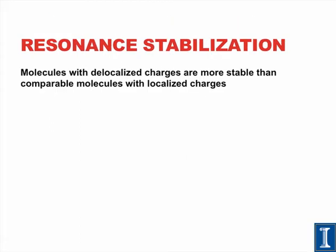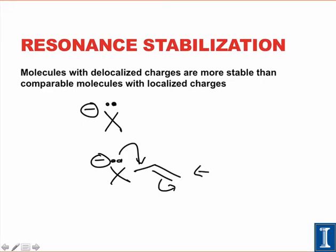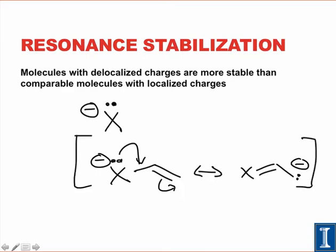Let's explore resonance stabilization in more detail. The core principle is that molecules with delocalized charges are more stable than comparable molecules with localized charges. A bare lone pair on an isolated atom is going to be less stable than a molecule whose negative charge is spread out over multiple atoms via resonance. Because of the delocalization of charge, the molecule with resonance is more stable than the one that lacks resonance completely.